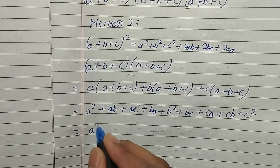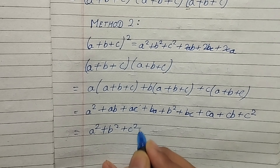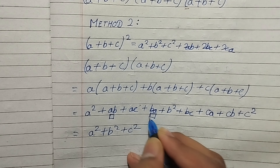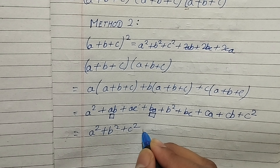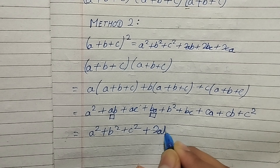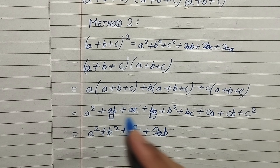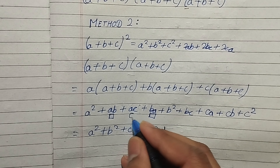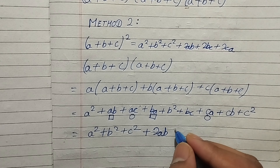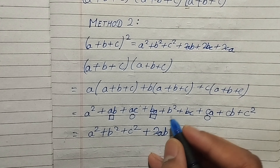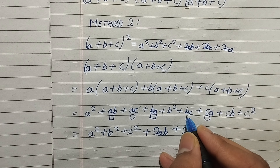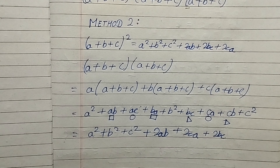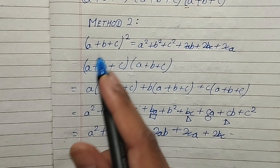Now we rearrange the terms. We get a² + b² + c². Then ab and ba are like terms, so they add up to 2ab. Similarly, ac and ca add up to 2ca, and bc and cb add up to 2bc. So the result equals a² + b² + c² + 2ab + 2bc + 2ca, which proves (a + b + c)².